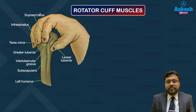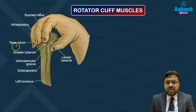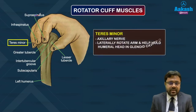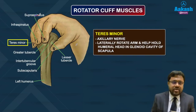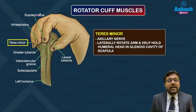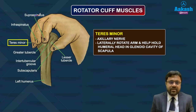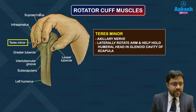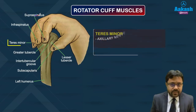Teres minor is supplied by the axillary nerve, specifically its posterior division. Its action is lateral rotation of the arm — the same action as infraspinatus — and it also helps hold the humeral head in the glenoid cavity of the scapula.